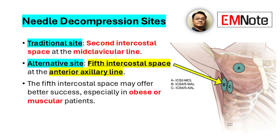However, an alternative approach is to use the fifth intercostal space at the anterior axillary line, which may offer higher success rates, particularly in muscular or obese patients.